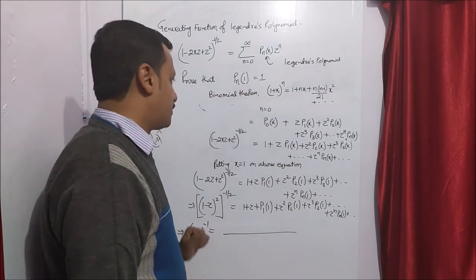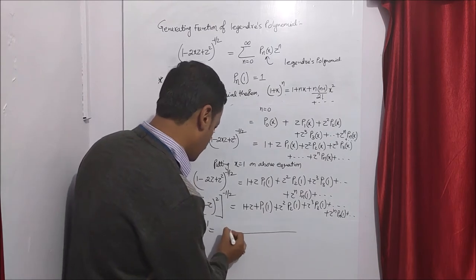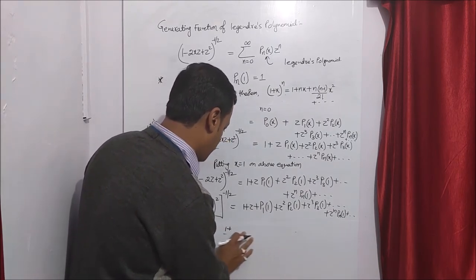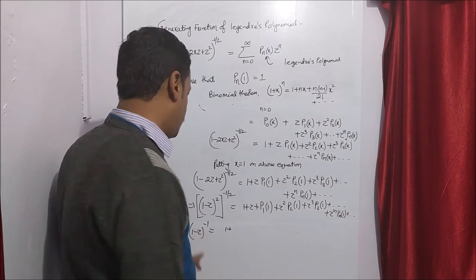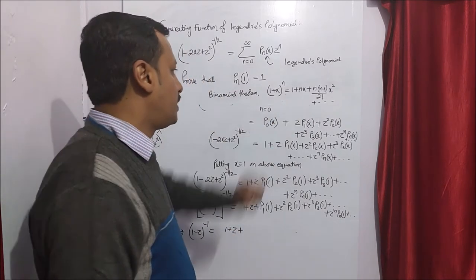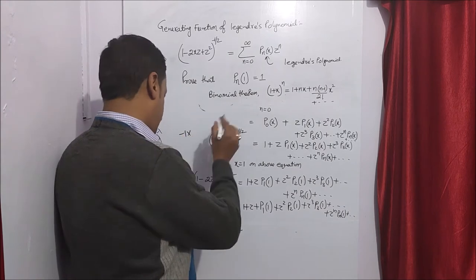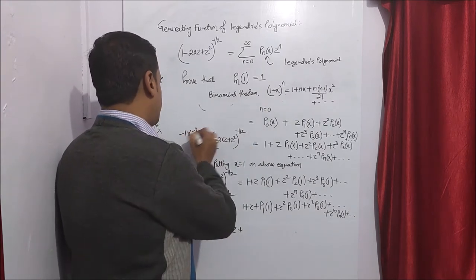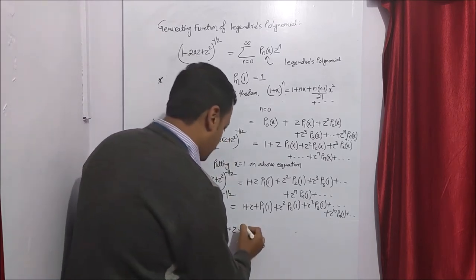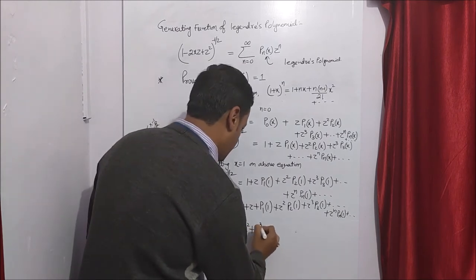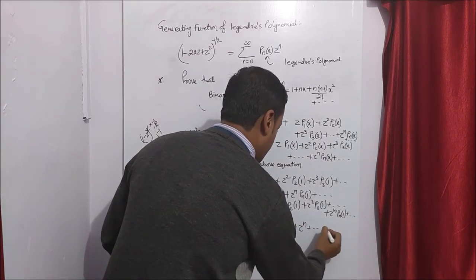Expanding 1 minus z to the power minus half using binomial theorem: the n value is minus 1 by 2 and x is minus z. So n times x gives minus 1 by 2 times minus z. Then n(n-1) divided by factorial 2: n is minus 1 by 2, n minus 1 is minus 3 by 2, factorial 2 is 2, with minus minus giving plus. Continuing this gives an infinite series.